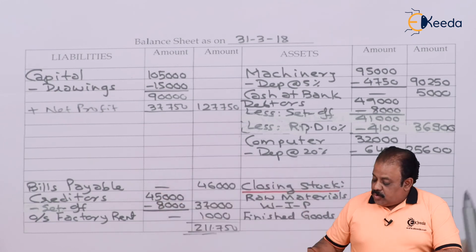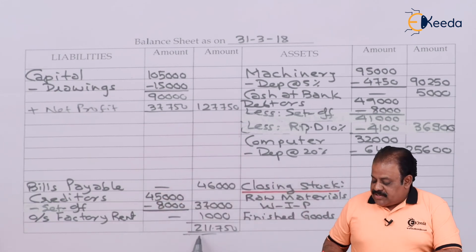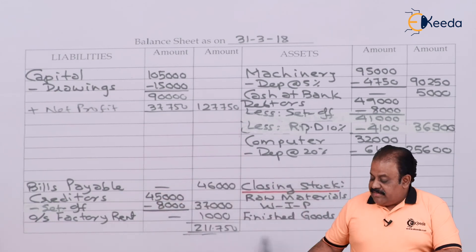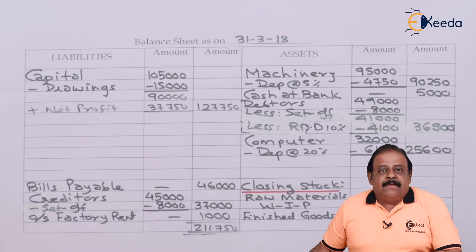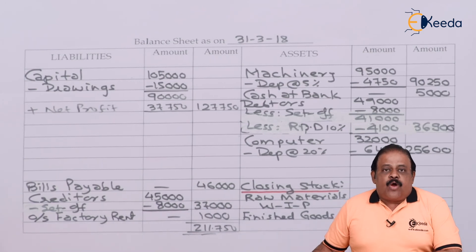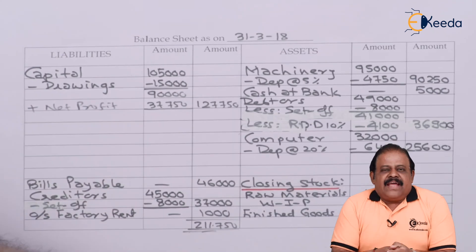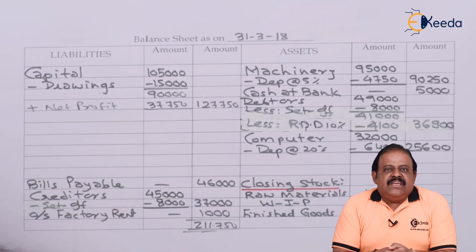Finally, we close the balance sheet. Total of balance sheet is 2,11,750. Assets and liabilities are both the same — that means the problem is correct. Thanks for watching this video. Stay tuned with eKrida.